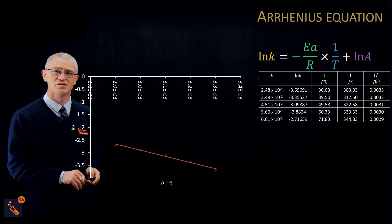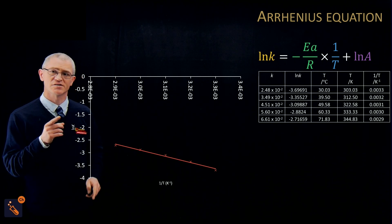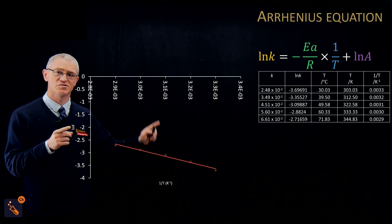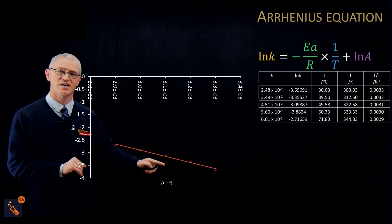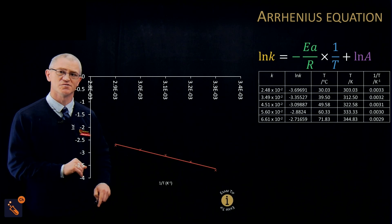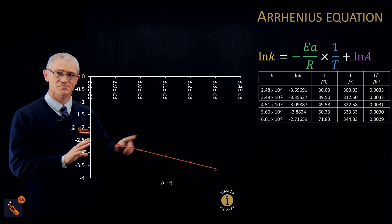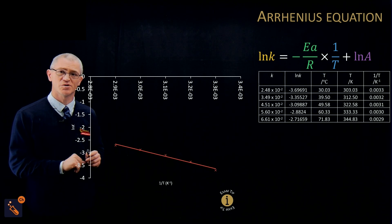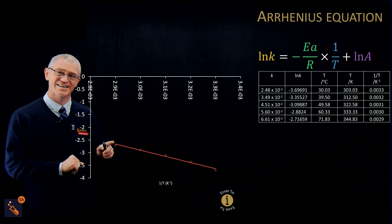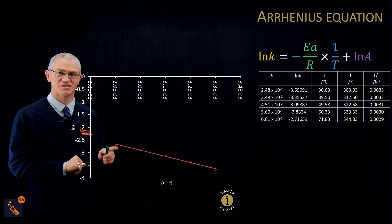We've got an equation with ×10⁻³ on the axis, so it's really important to read that. We have natural log of k on the y-axis and 1/T on the x-axis, giving a negative gradient. This is really important in the exam: if you find a positive gradient, you've probably put your numbers on the wrong axes. It must be negative — going downward like this.